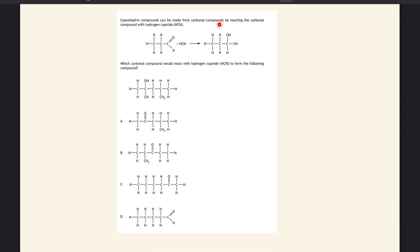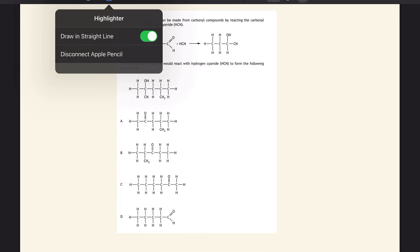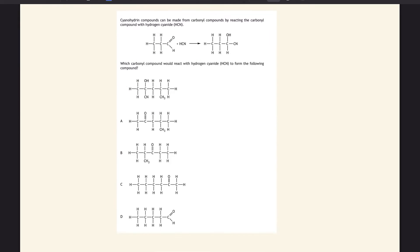It tells us cyanohydrin compounds can be made from carbonyl compounds by reacting with hydrogen cyanide. So this is our carbonyl compound and hydrogen cyanide makes this. This is where the game of spot the difference is - you want to see how this molecule changed into this molecule. Usually changes happen at the functional groups. This functional group has now become that, and the rest stayed the same.